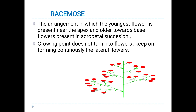In cymose inflorescence, the youngest flowers are present at the apex and the older flowers are at the base. In racemose inflorescence, the tip doesn't bear any flower, and at the tip they have small young flowers while at the base they have older, larger flowers. Young flowers are at the tip and old flowers are at the base.